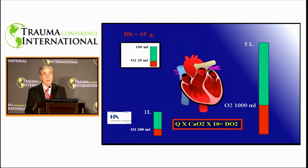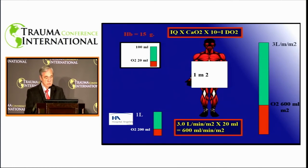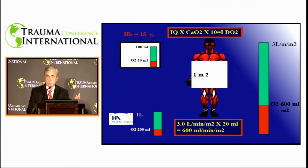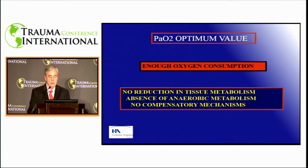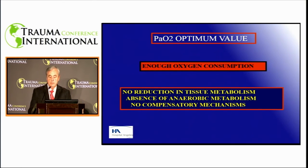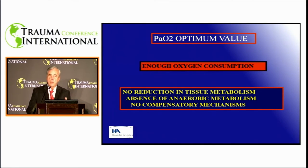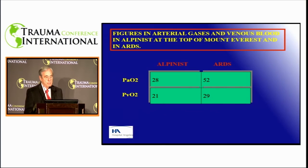Everything we have said indicates that oxygen availability depends on the amount of hemoglobin, its oxygen saturation, and we always carry it to index values—that is, values taken to body surface area. We found critical values as to consumption and availability in the seriously ill patient, but when we don't have a reduction in tissue metabolism, it means we have good oxygen transportation.